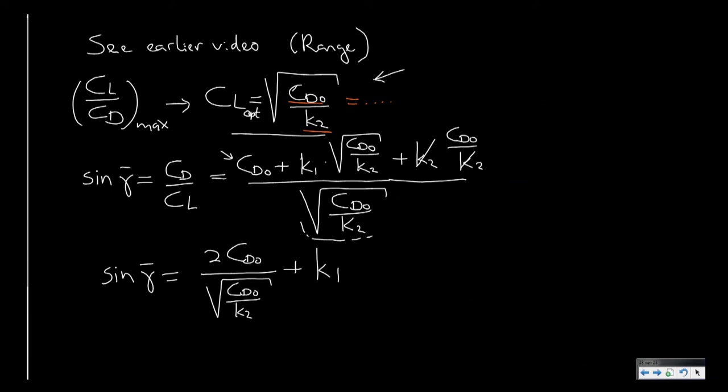plus a constant term k1, because this whole relation becomes k1. So please notice that all these terms here are constants. So the sine of gamma is also a fixed constant if we know what the parabolic lift drag polar looks like.